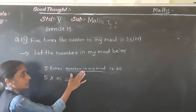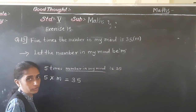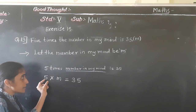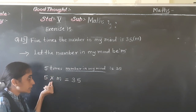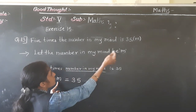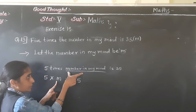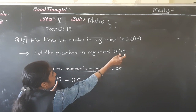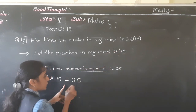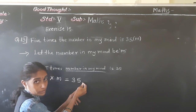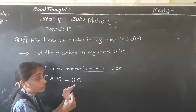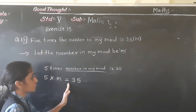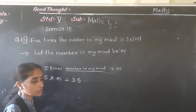5 times the number in my mind is 35. For times I write the multiplication sign. The number in my mind I consider n. So multiplied by n, is equal to 35. This is how we write the equation: 5 × n = 35.